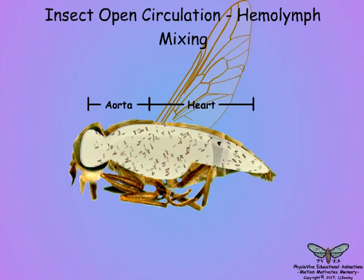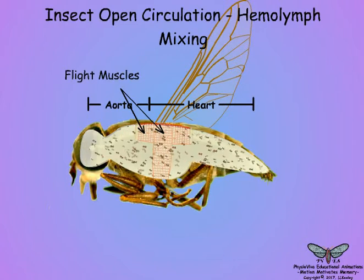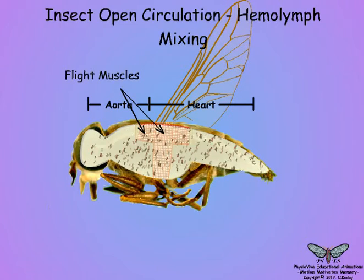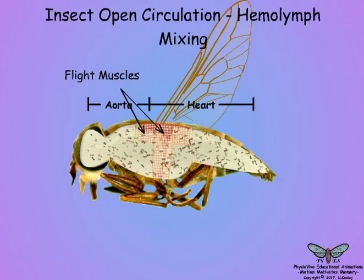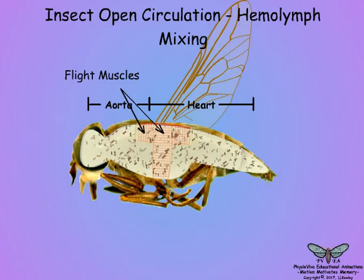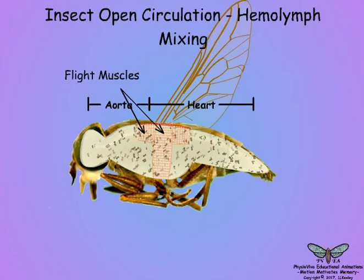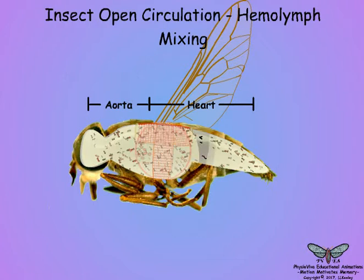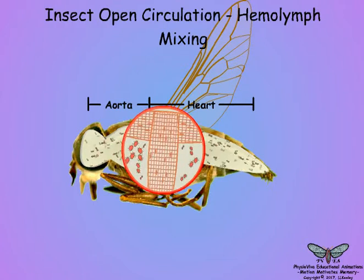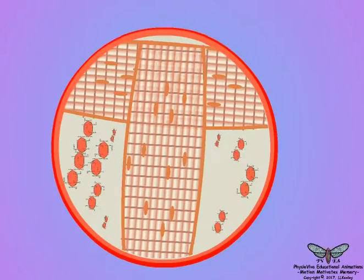Since insects are highly active animals, and their flight muscles are one of the most energetically active tissues of any animal, the flight muscles must be able to quickly meet both sudden and sustained energy demands. In many species of highly active insects, carbohydrate is the energy source for the flight muscles.